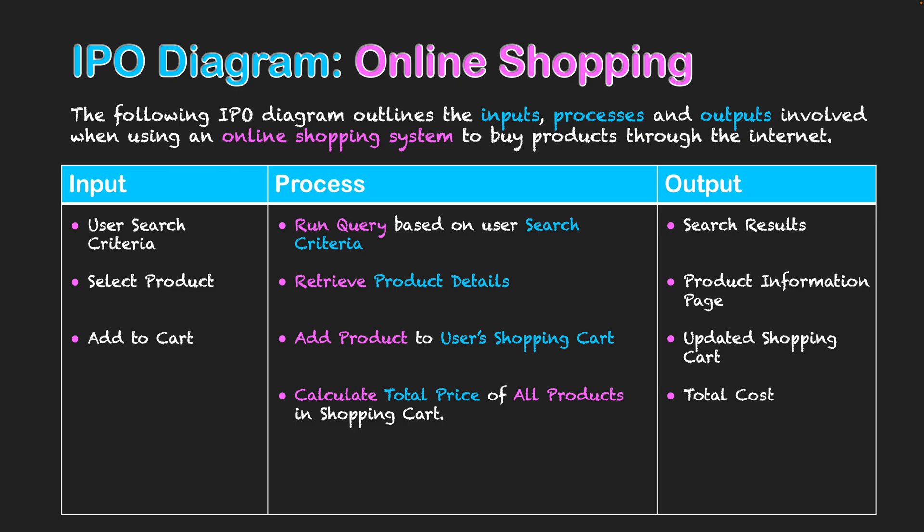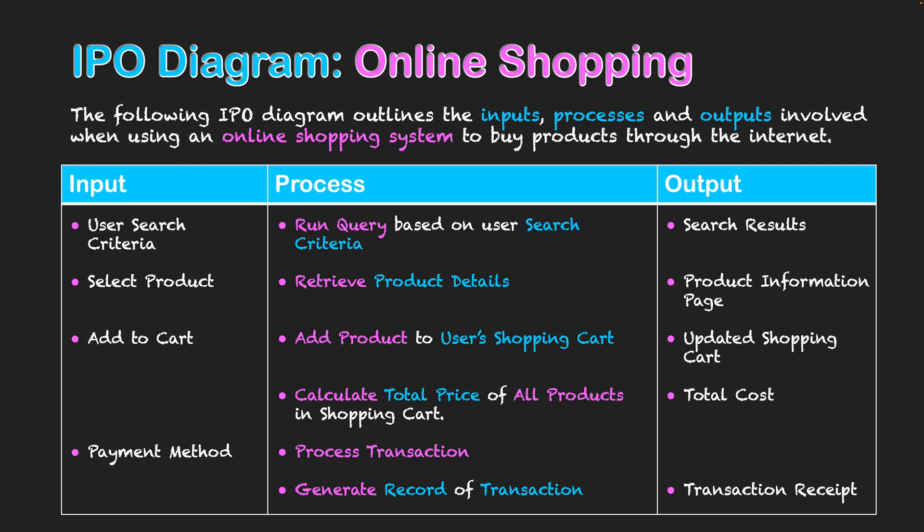The next step is the actual purchasing of those products. The user will need to enter their payment method — most likely a card-based method or an online payment system such as PayPal — and the system will process the transaction. Following this, a record needs to be generated: a receipt for the user that may be displayed on screen or sent via email, which the system outputs as a transaction receipt for the user's records.